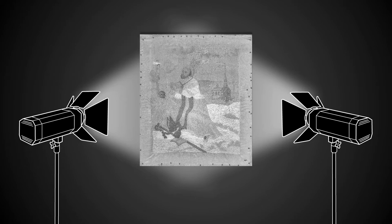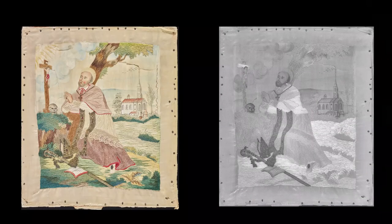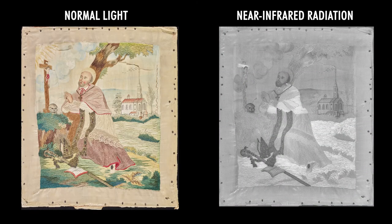Near-infrared photography can reveal under drawings and provide a clearer view of faded or obscured writings. To record near-infrared radiation, we use a high-intensity studio flash and a camera that has been modified to receive only infrared radiation. Here, the church, the cross, the hands, the crucifixion of Christ, and the skull are revealed to be graphite drawings.